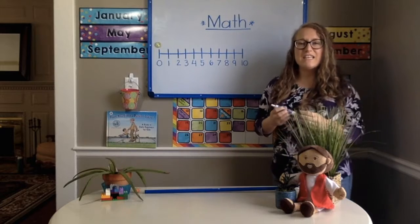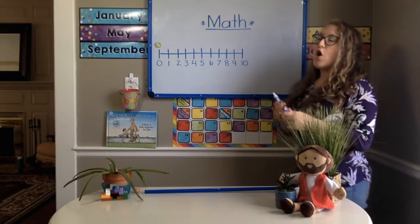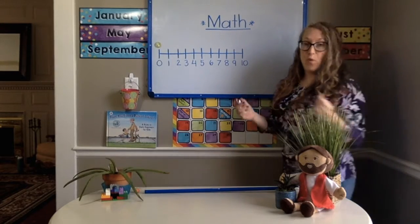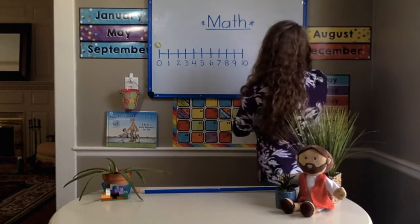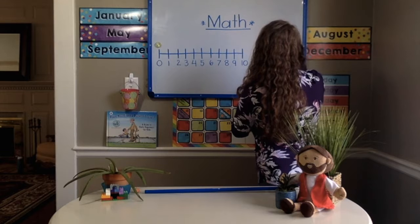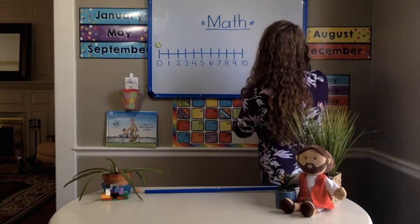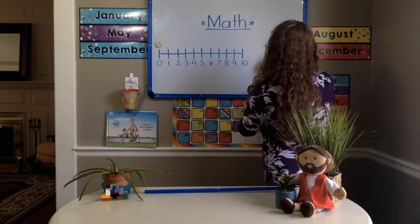Your first math problem today, kindergarten, is going to be 3 plus 4. So I'm going to write that here. And remember, we're writing them up and down now. 3 plus 4 equals. Remember how we can write them up and down now.